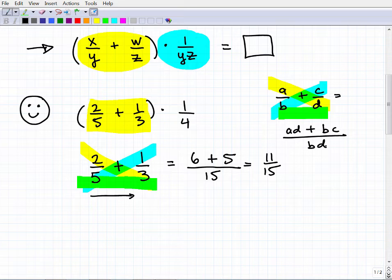One of the small disadvantages with this particular method is that sometimes when you do this, you may not have the lowest common denominator, so it's important that you reduce your final answer. Here we have eleven fifteenths, so let's write this here: eleven fifteenths times one fourth.